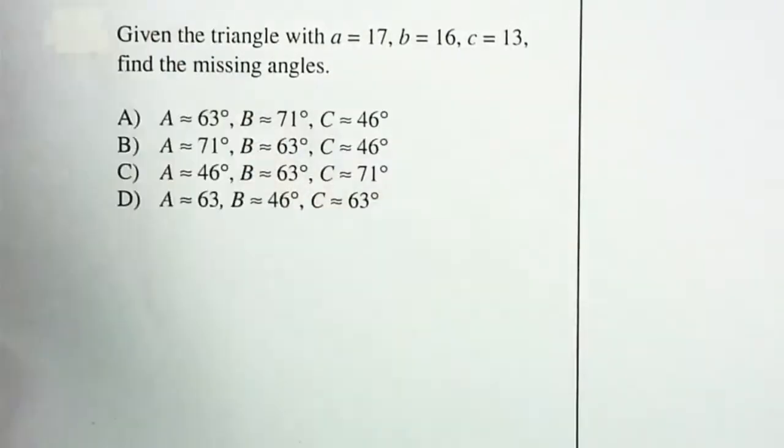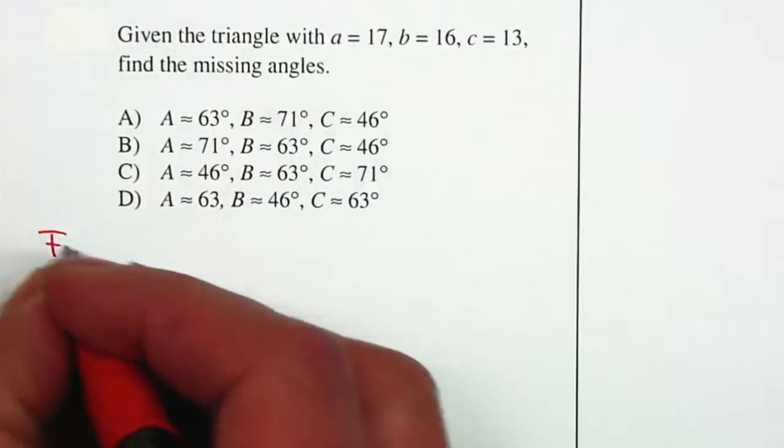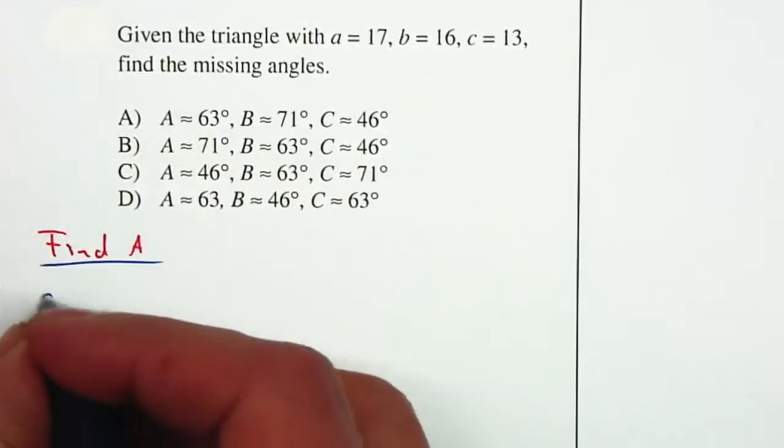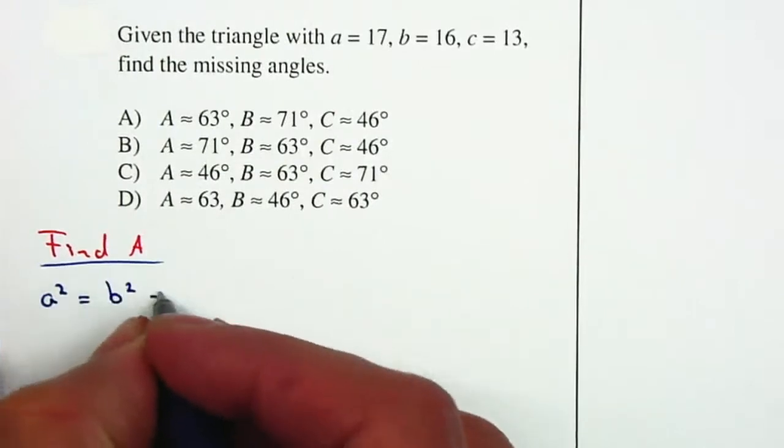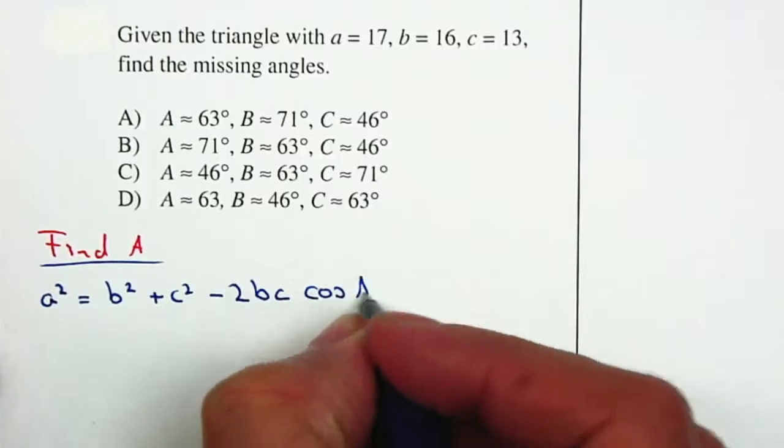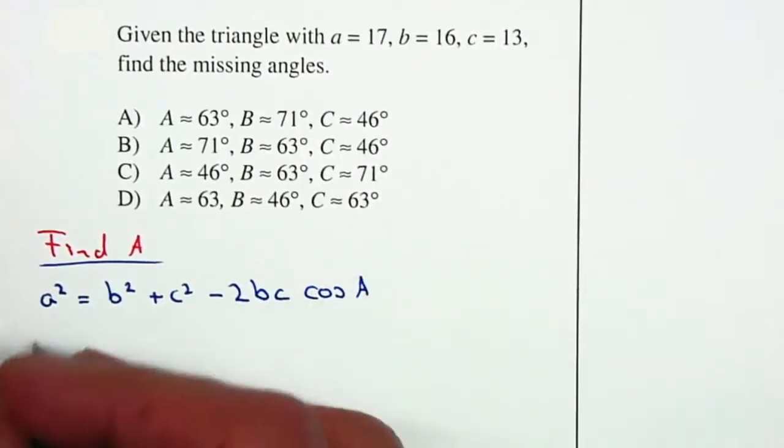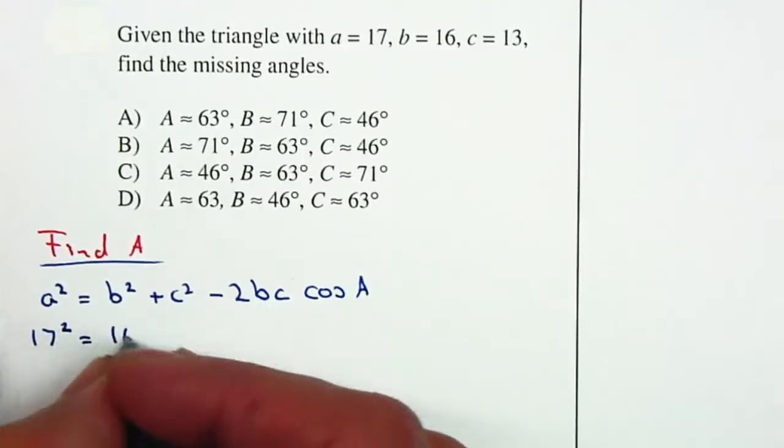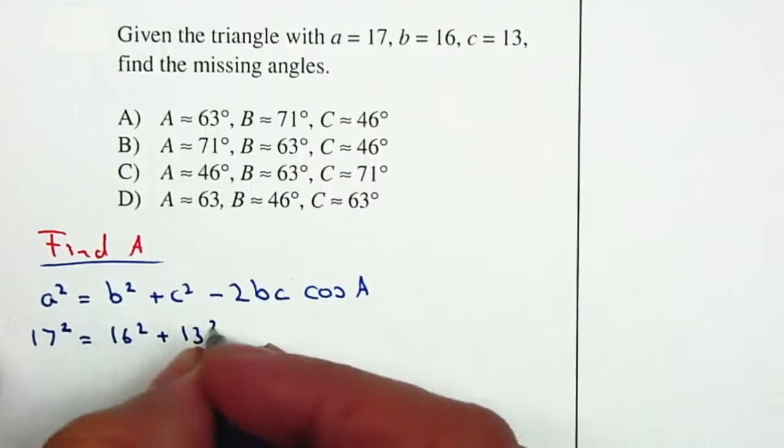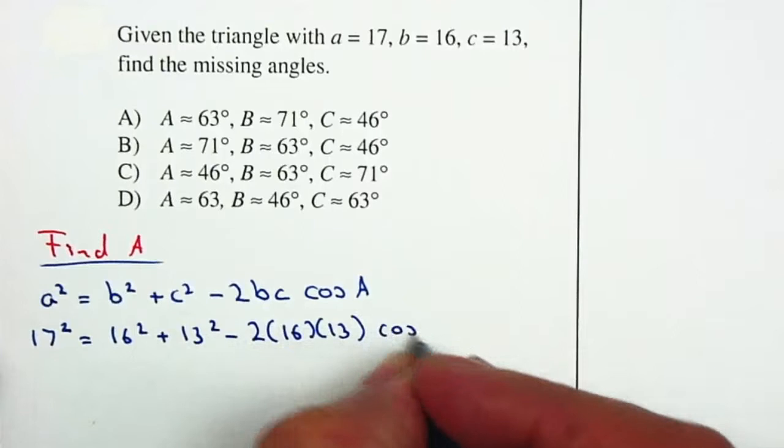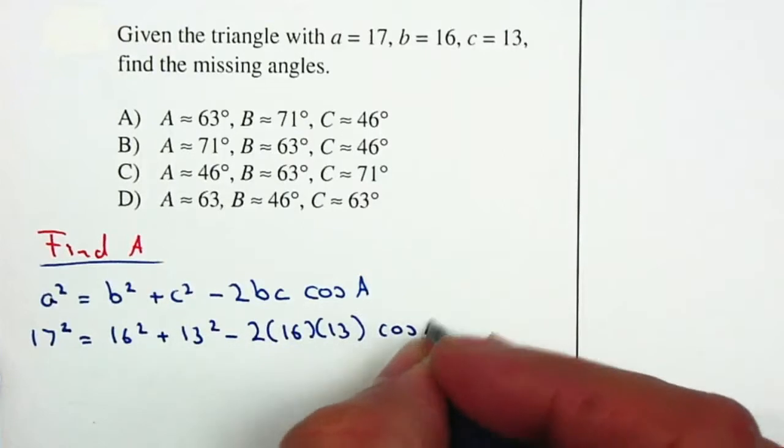I'm going to use the law of cosines to find A: a² = b² + c² - 2bc cos A. So a is 17, 17², b is 16², plus c which is 13², minus 2 times 16 times 13 times the cosine of A, and that's what we're looking for.